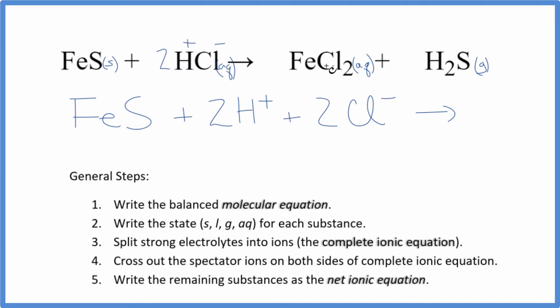Products - we have chloride, we said that was 1-. We have two of them. The iron has to be 2+. So we'll have the iron(II) ion, Fe2+, plus, again, two chloride ions. And we're not going to split the H2S apart because it's a gas. So we're just going to call that H2S.